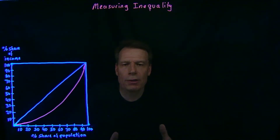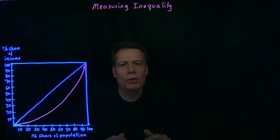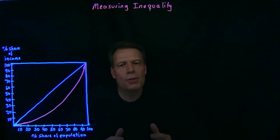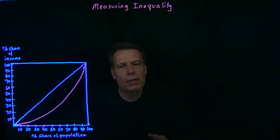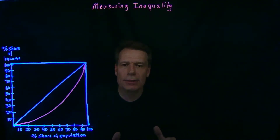We've now seen two philosophical approaches to social justice. The first is the Rawlsian approach, which looks at outcomes and asks, are those outcomes just? And the second is the Nozick approach, which instead of focusing on outcomes, focuses on the process by which those outcomes came about, and then asks, was that process just?